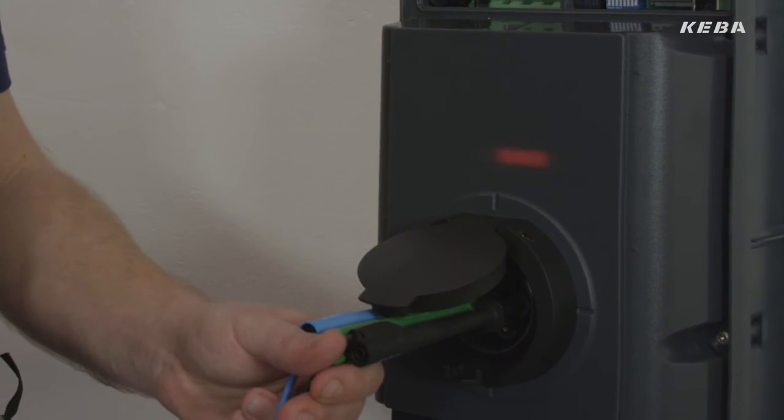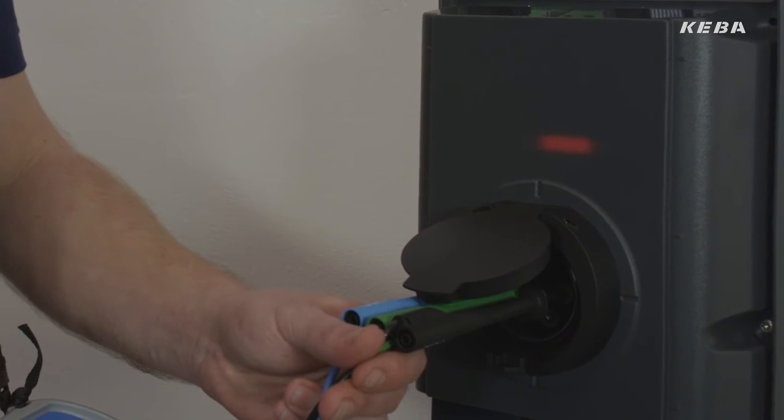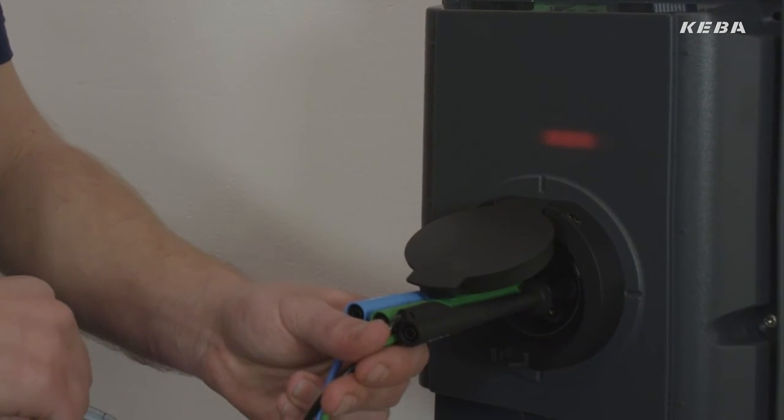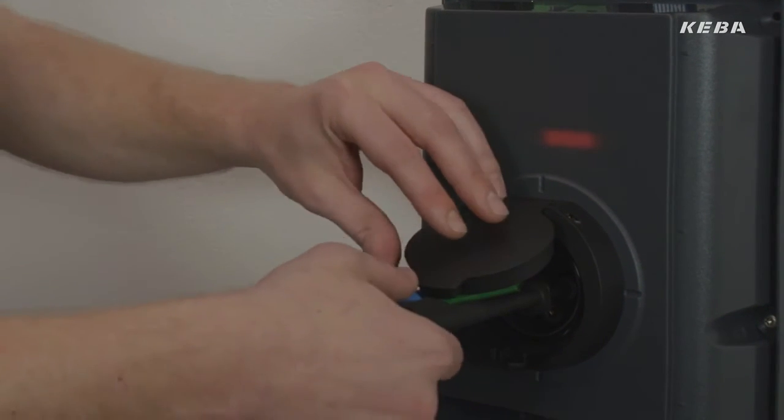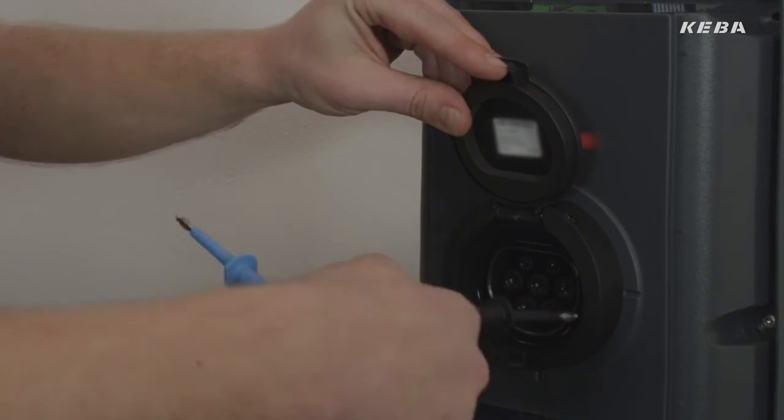An orange LED indicates that the wallbox is in commissioning mode. In this mode, the effectiveness of the installation's safety measures can be tested according to national regulations before the unit is used for the first time.